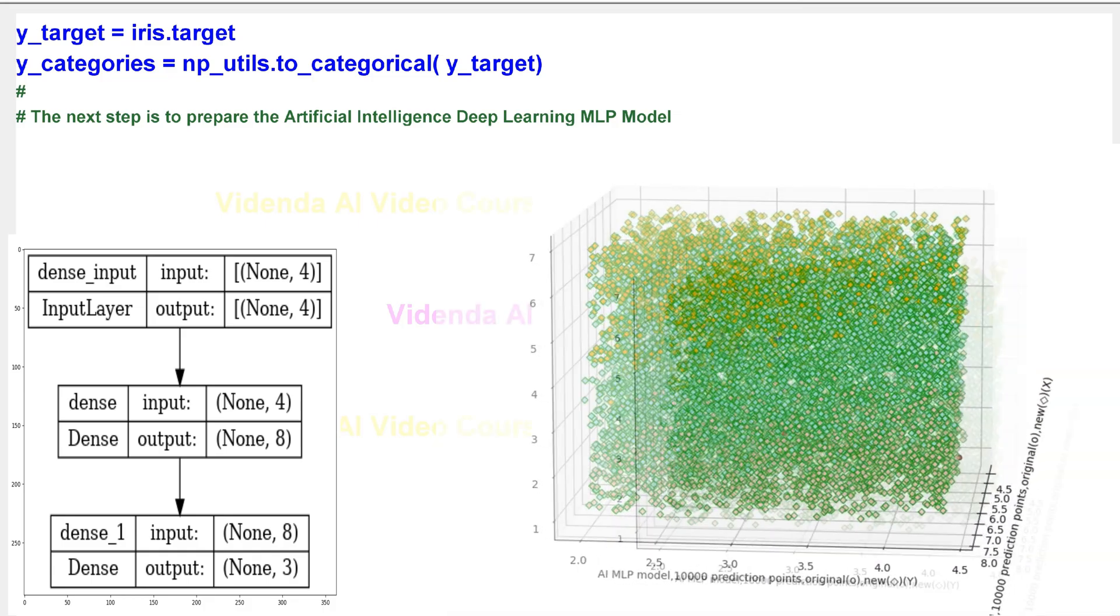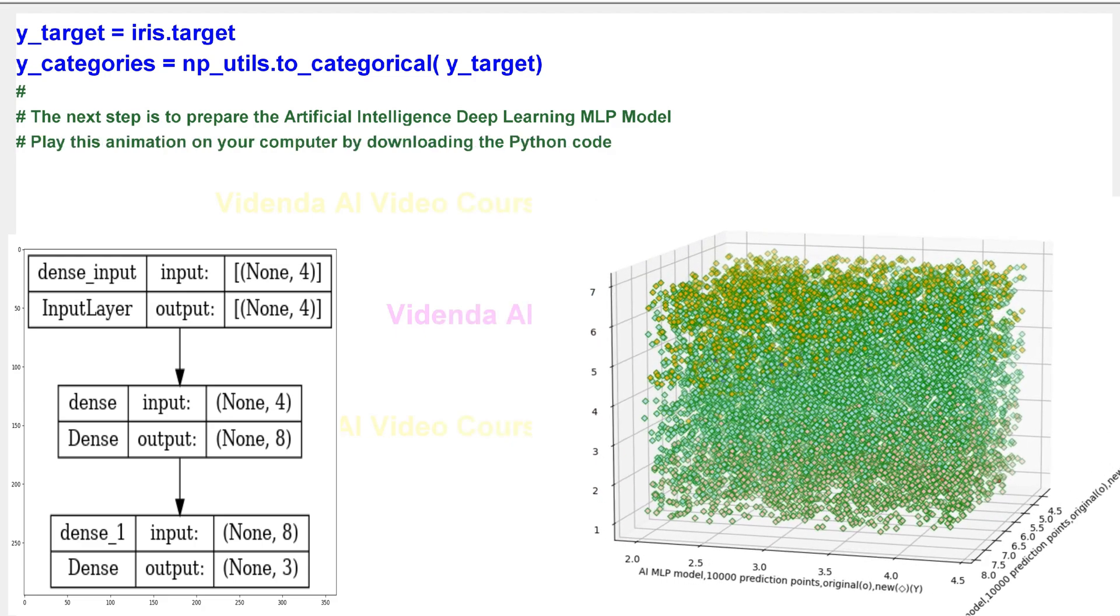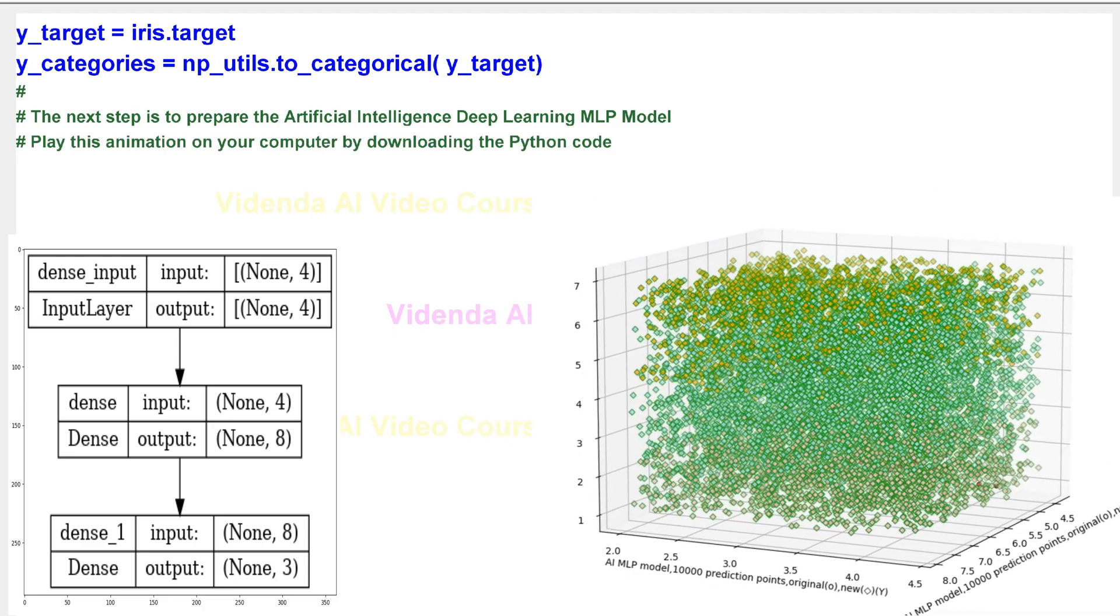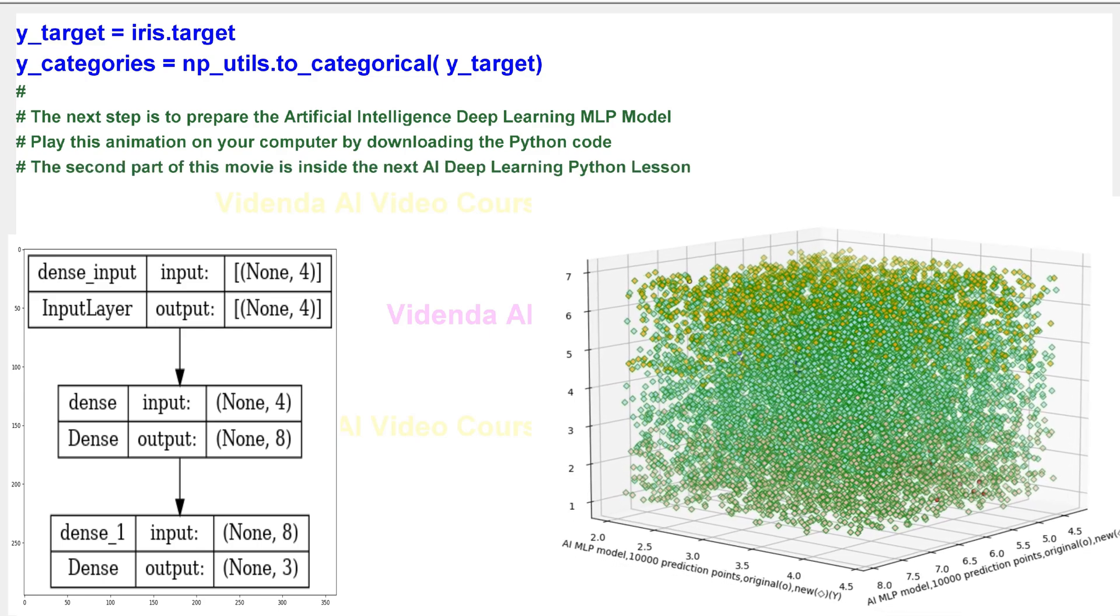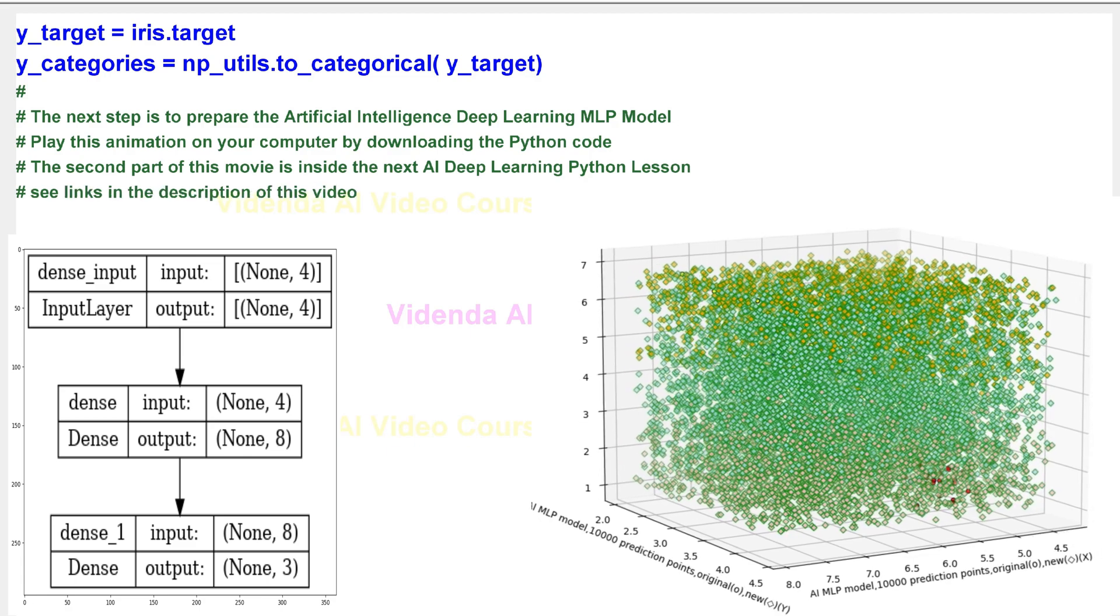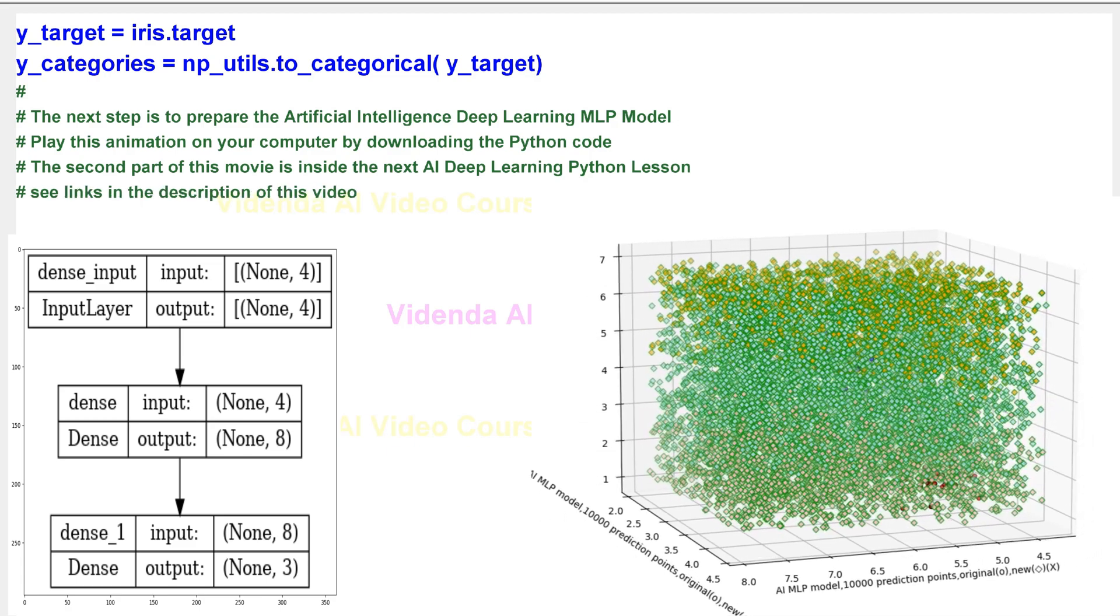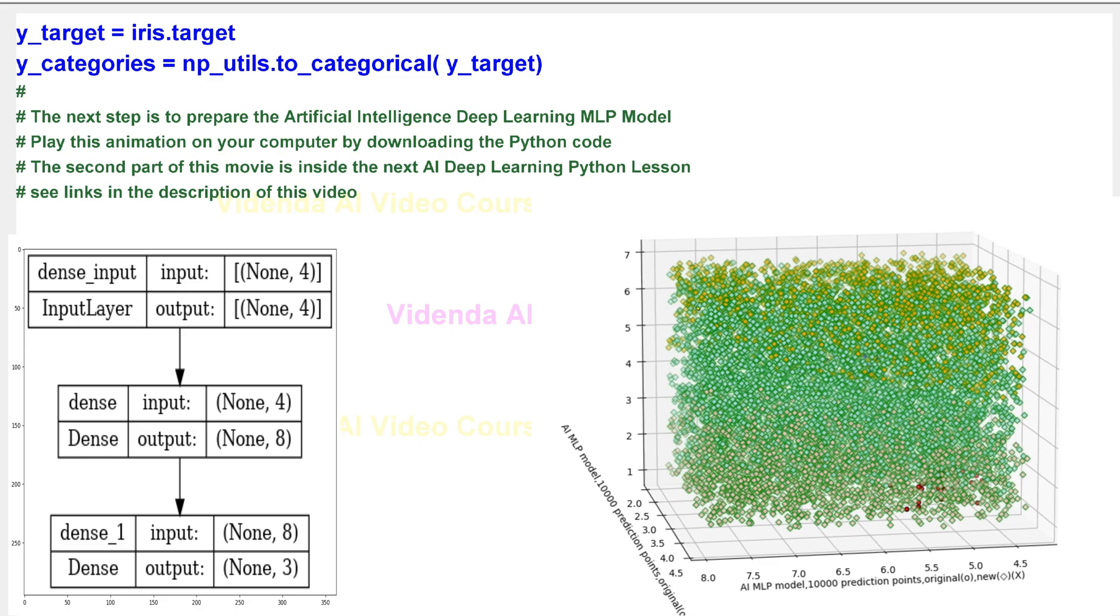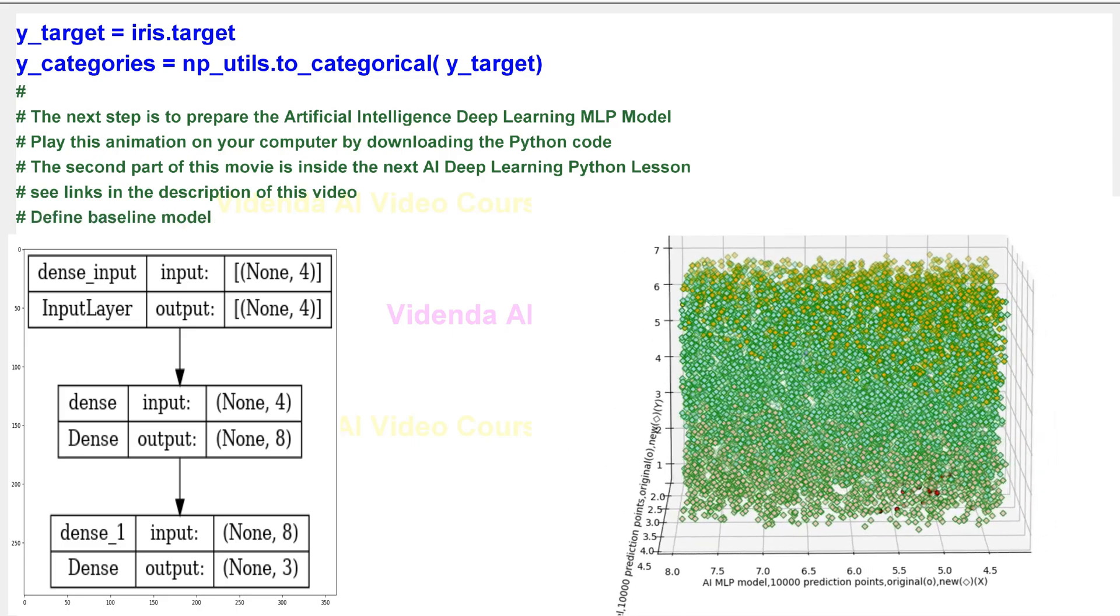The next step is to prepare the Artificial Intelligence Deep Learning MLP model. Play this animation on your computer by downloading the Python code. The second part of this movie is inside the next AI Deep Learning Python lesson. See links in the description of this video.